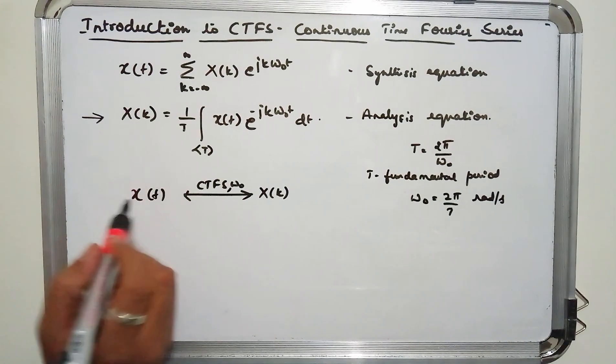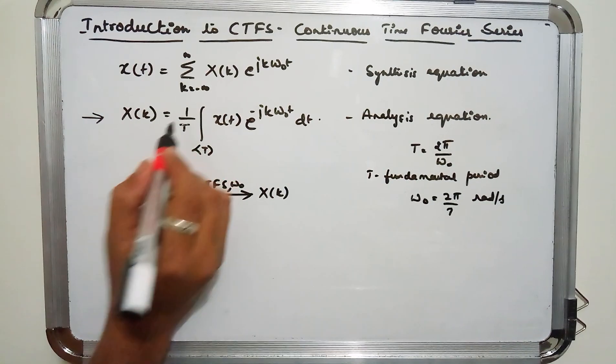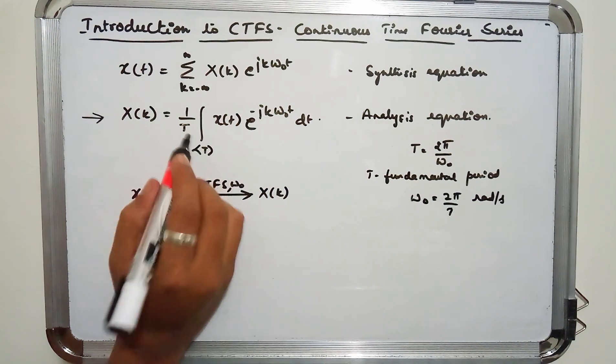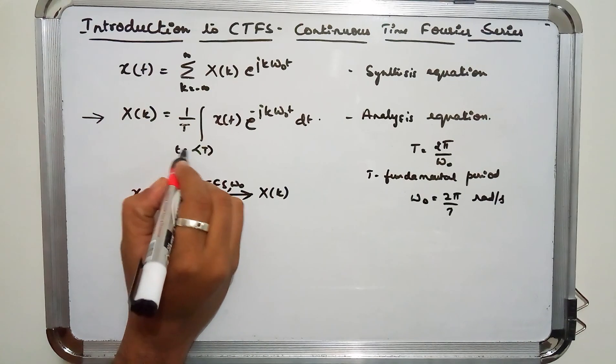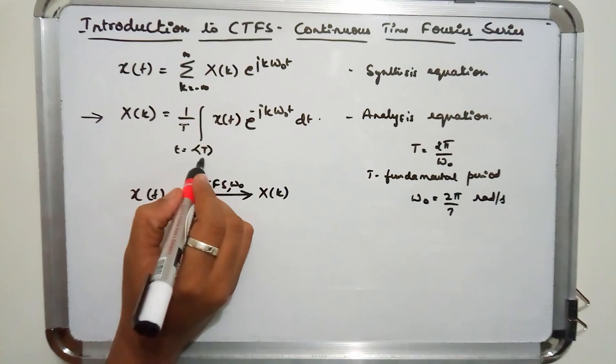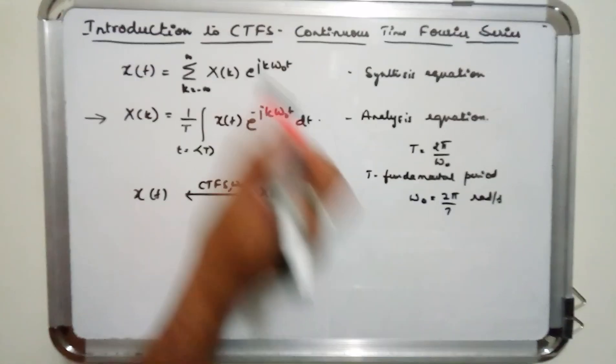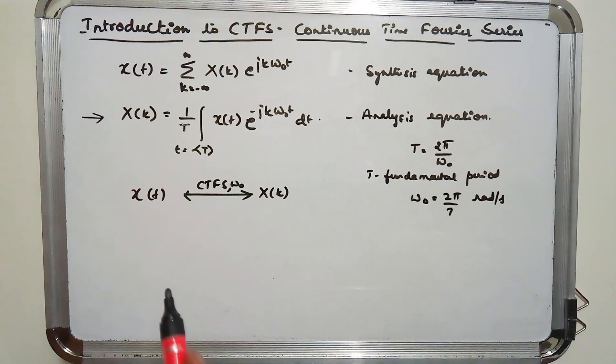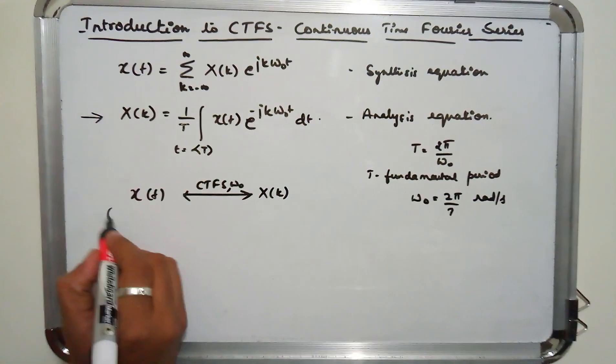So it is similar to the DTFS equation. There we had 1 by n summation over entire n. Here you have integration over entire t. T means it is period. We are dealing with continuous time Fourier series wherein the input signal has to be periodic.